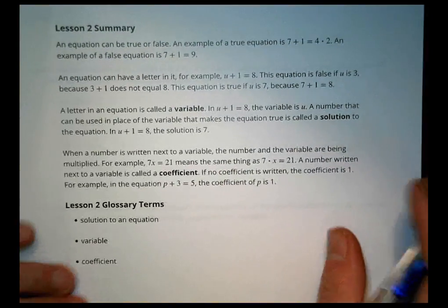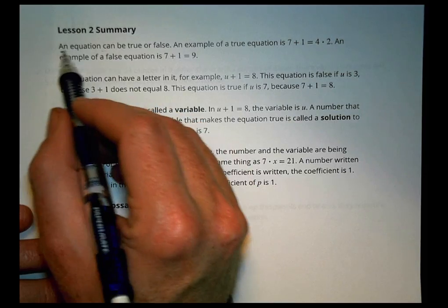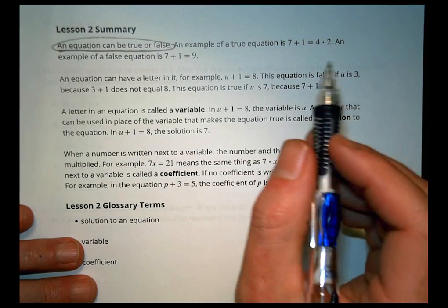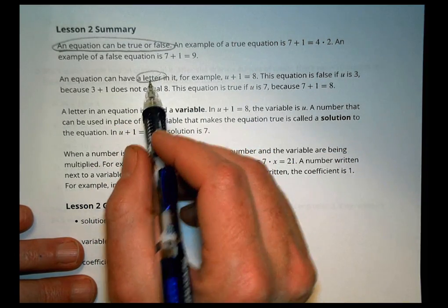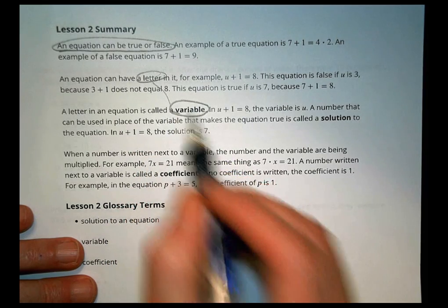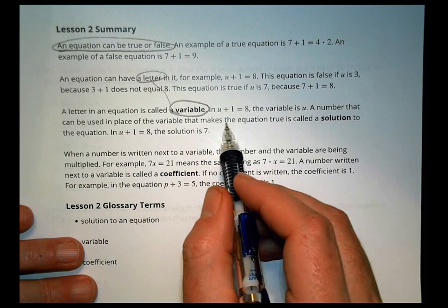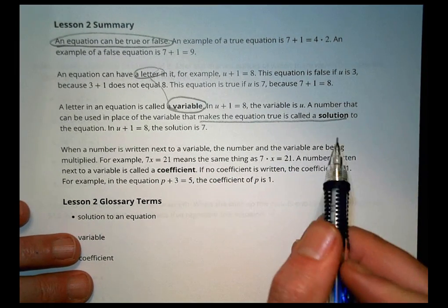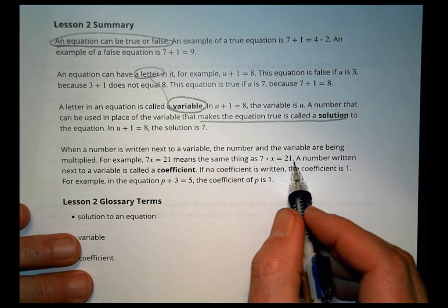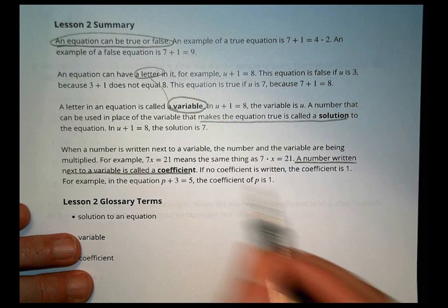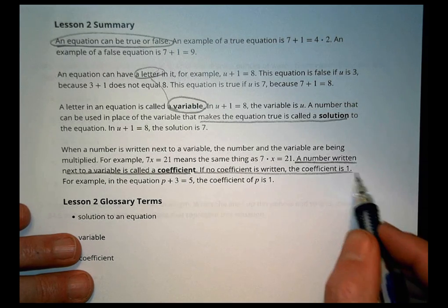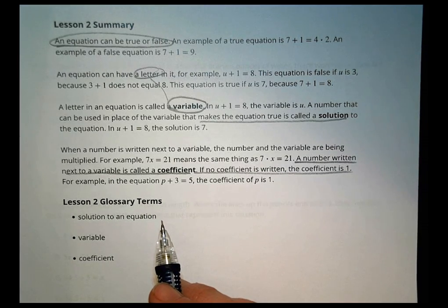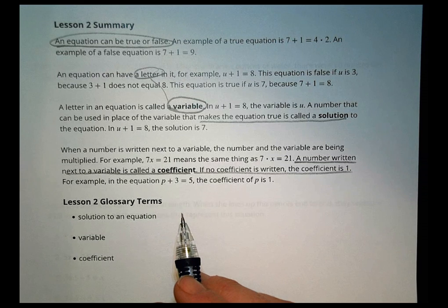Let's take a look at our summary. It says an equation, just keep this in mind, can be true or false. We saw that in our examples, depending upon what those variables are going to be. An equation can have a letter in it. That letter is referred to as a variable. When a variable makes an equation true, it's called a solution. If it's not true, it's not a solution. The other thing we talked about is what's called a coefficient. The number written next to a variable is called a coefficient. If no coefficient is written, the coefficient is 1. So those are all important things we talked about today in the lesson. We're going to pause there to give you a chance to work on your homework, and we'll come back and check in together in just a few minutes.